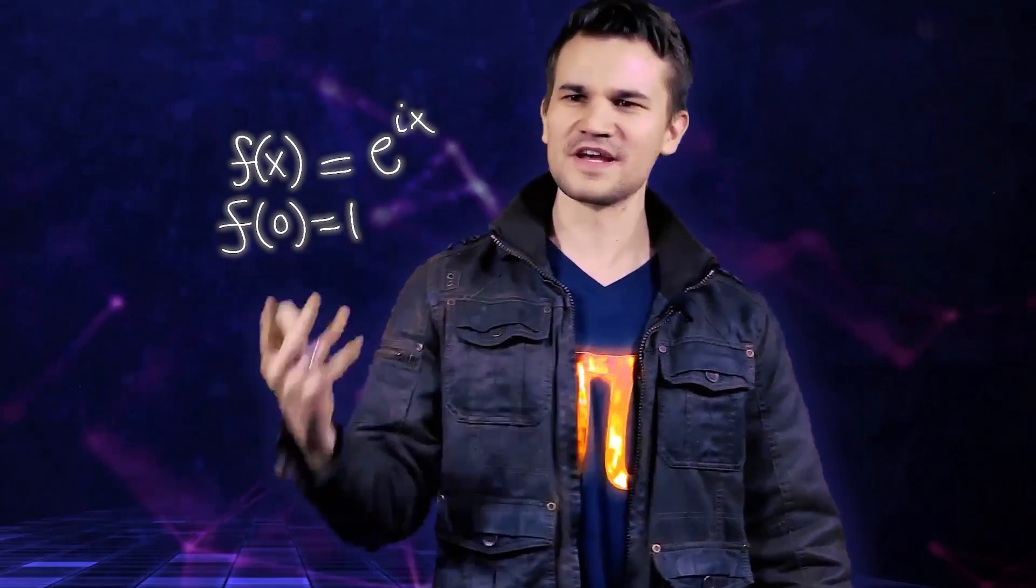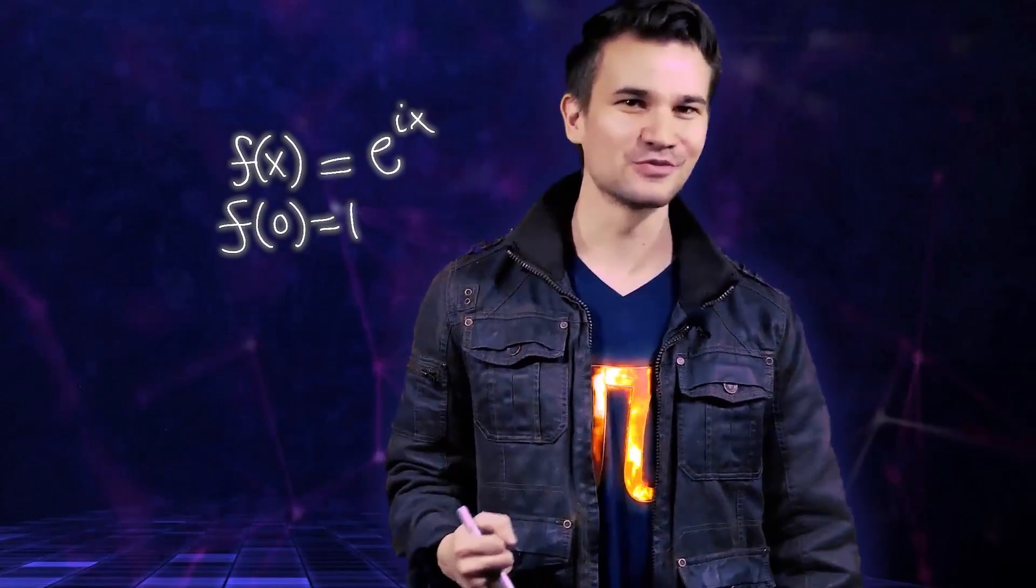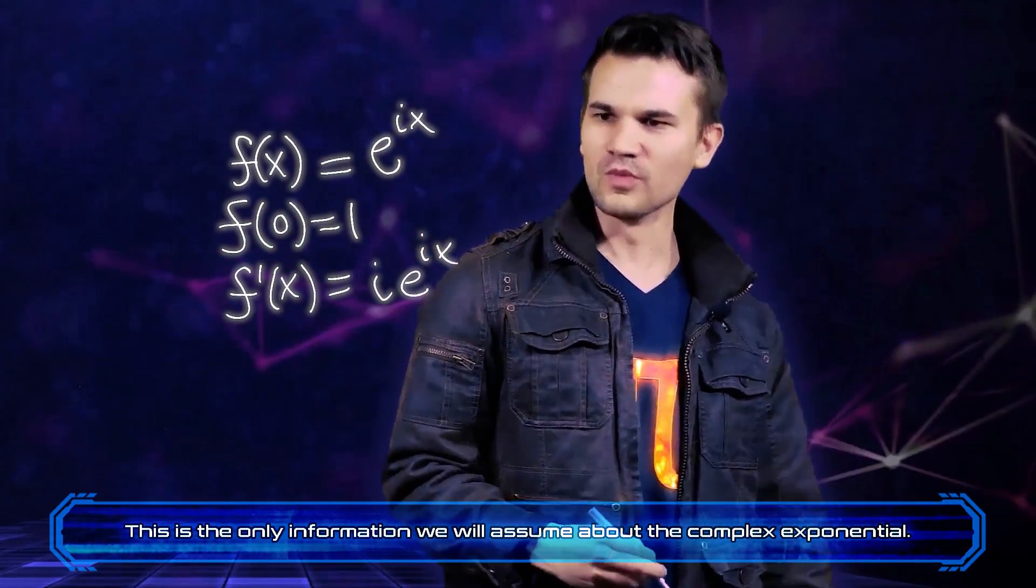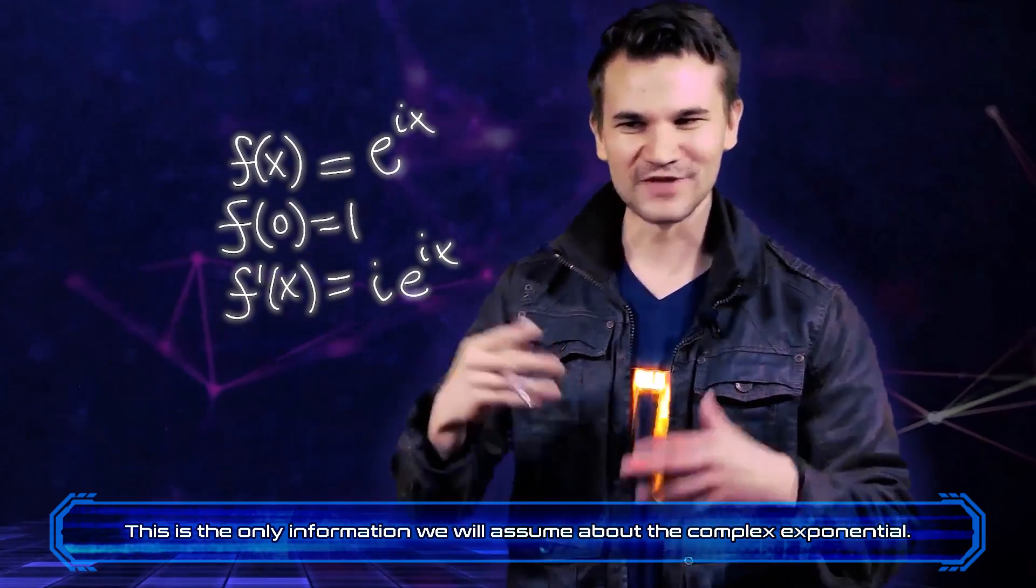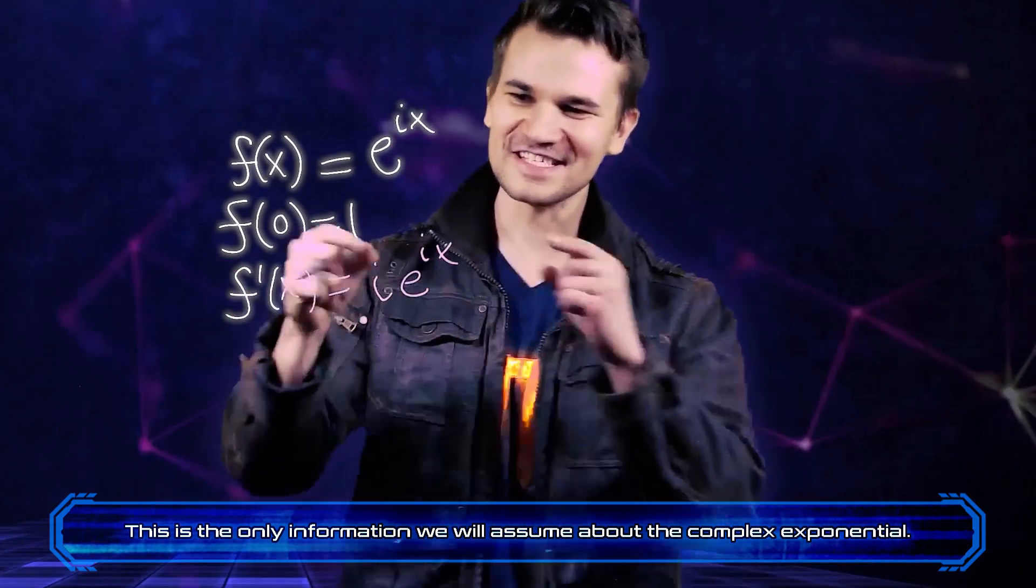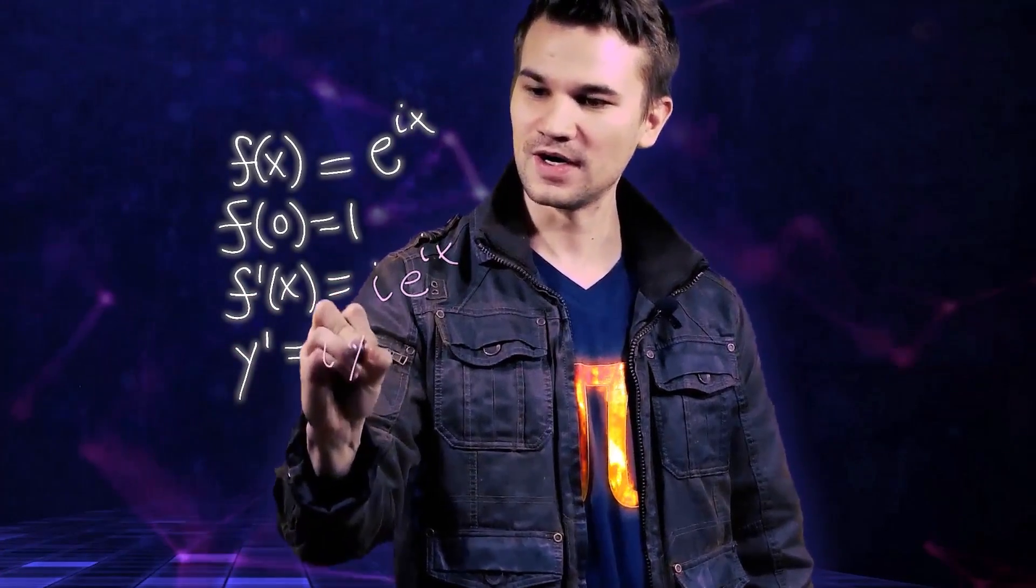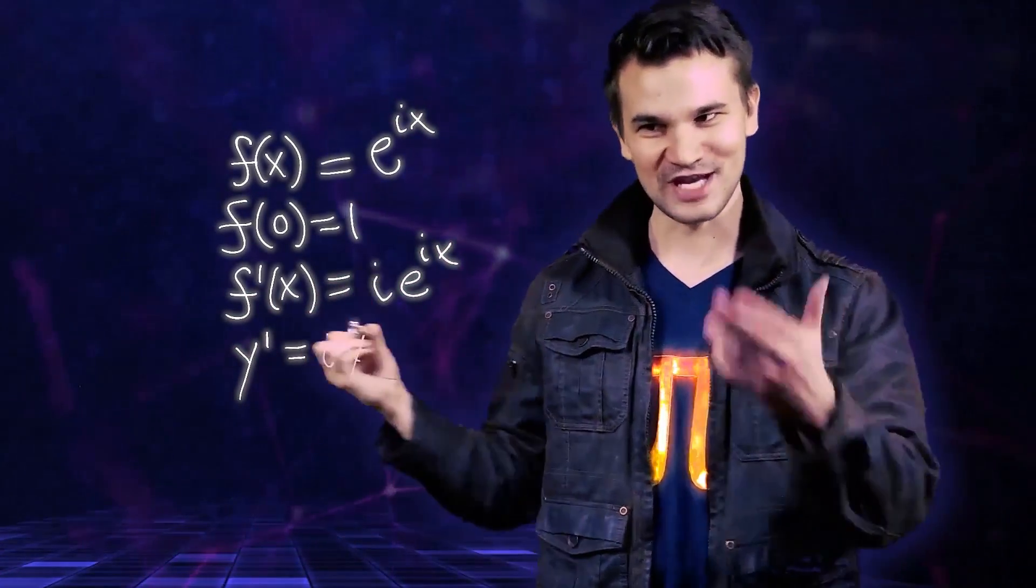And another thing I could say is that this should probably follow the chain rule, so we'll say that f prime of x is i e to the ix. Okay cool, well then we can view this as a sort of differential equation. This satisfies the differential equation y prime equals iy and it satisfies the initial value y of 0 equals 1.